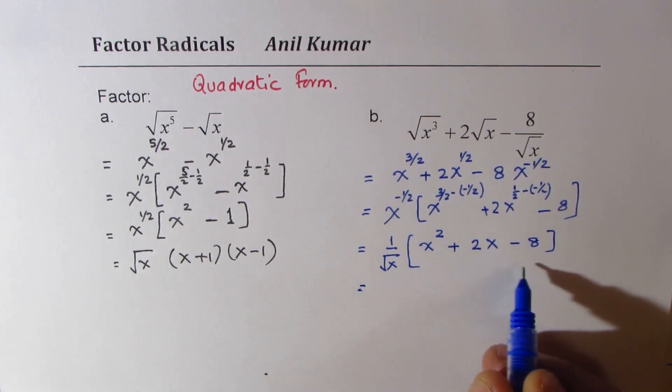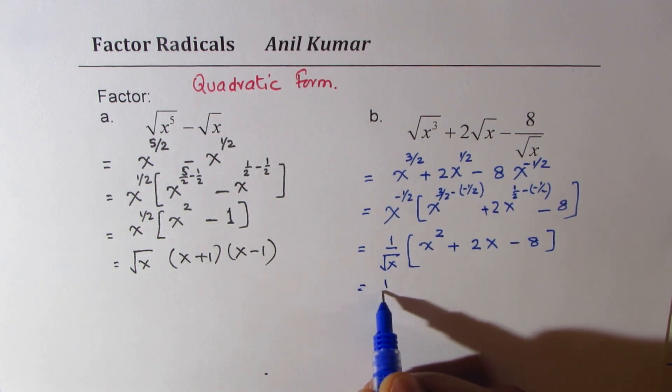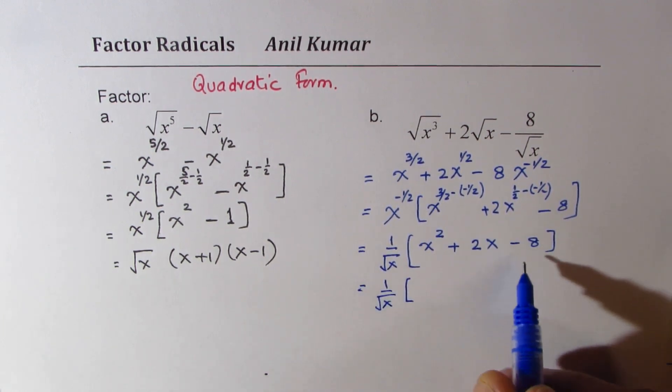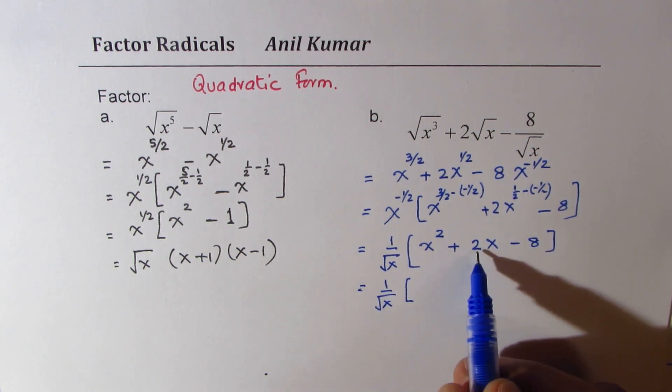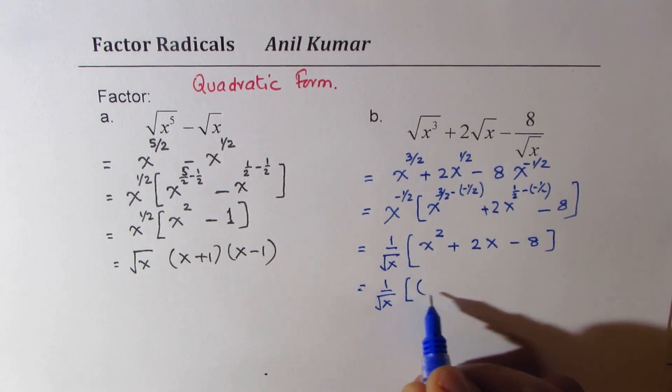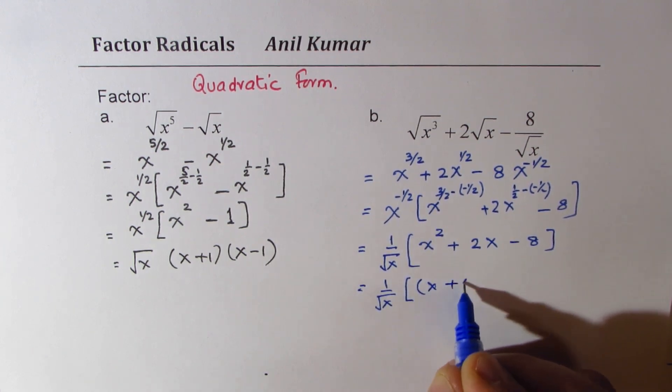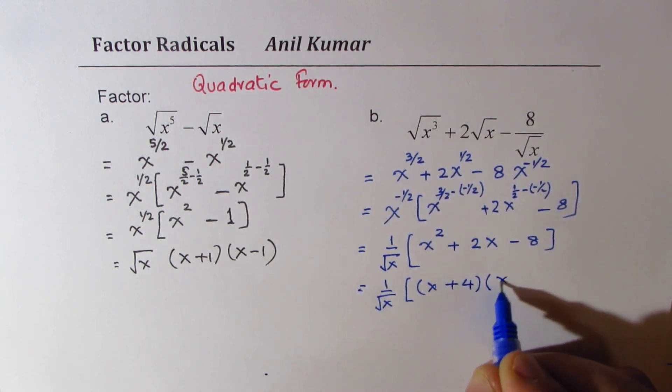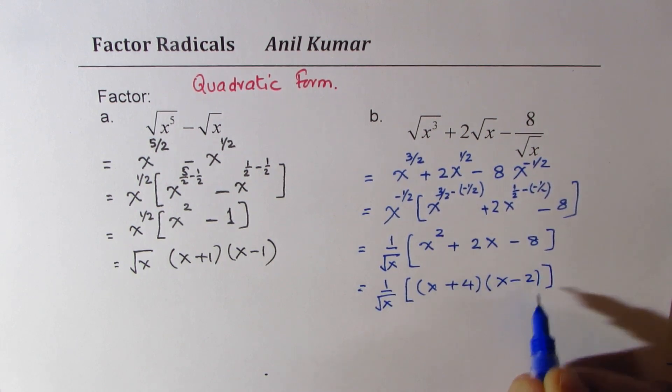Now, this becomes the quadratic trinomial, which now we can easily factor using sum and product. We are looking for two numbers whose product is minus 8 and sum is 2, so the numbers are 4 and 2. So we can write this as x plus 4 times x minus 2. Perfect.